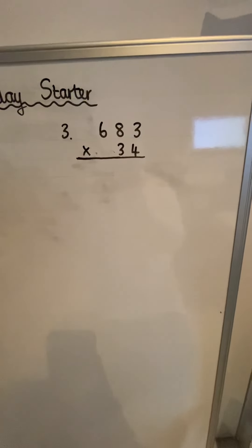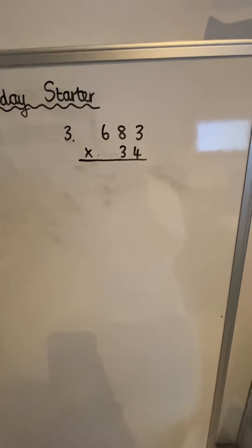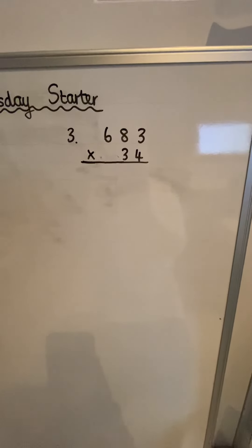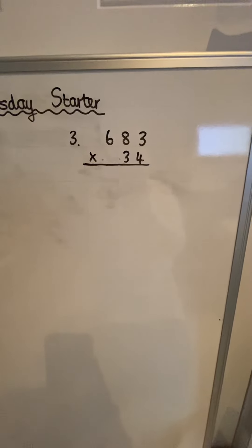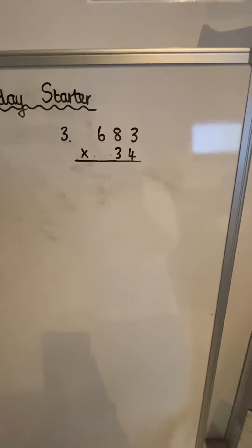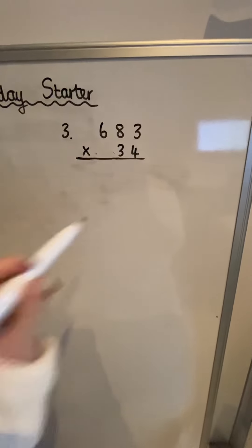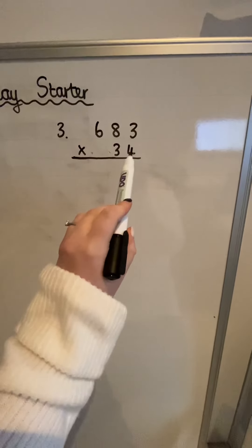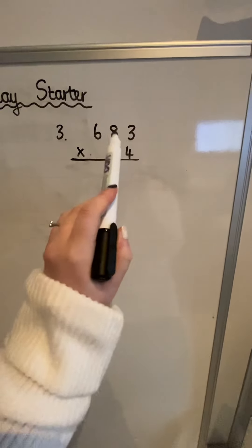I'm going to show you how to answer question three. This time it's a little bit different because it's a three-digit number multiplied by a two-digit number, so we've just got an extra step to follow. We're still going to begin the same way — we're still going to look at the ones digit in the second number, which is four, and then multiply that by each of the digits in 683.